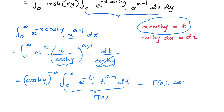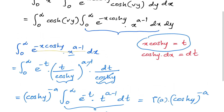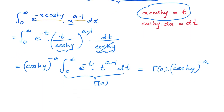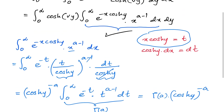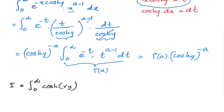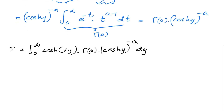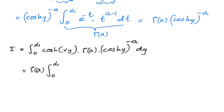This integral is simply the Gamma function Γ(a), so the inner integral equals Γ(a) times cosh(y) to the minus a. Therefore our full integral I becomes the integral from 0 to infinity of cosh(vy) times Γ(a) times cosh(y) to the minus a dy.